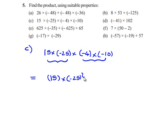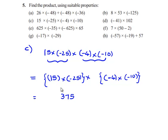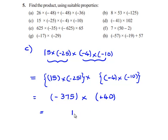15 into 25 gives 375. As the signs are different, we get a negative sign, giving negative 375. For negative 4 times negative 10: 4 into 10 gives 40, and as the signs are similar, we get plus 40. Therefore, negative 375 multiplied by 40 gives 15,000. As the signs are different, we get a negative sign.